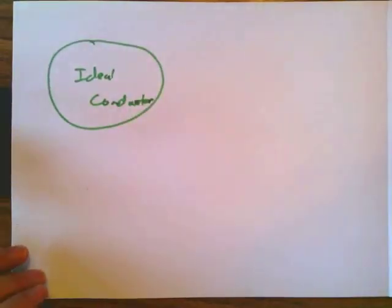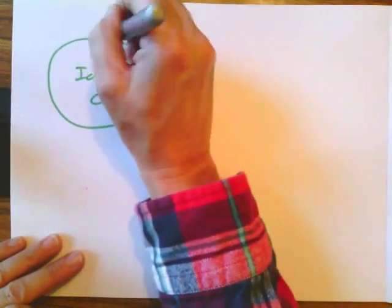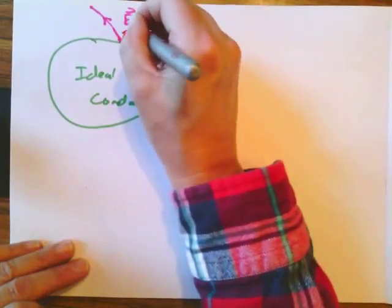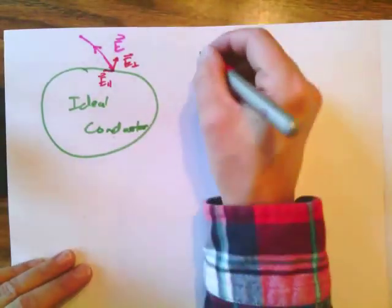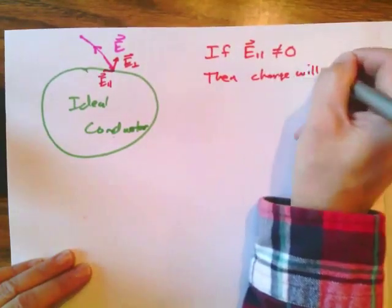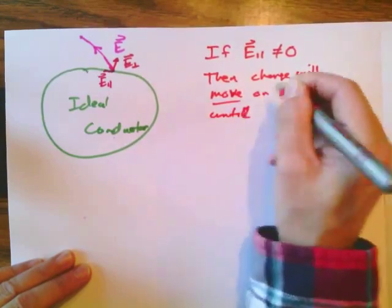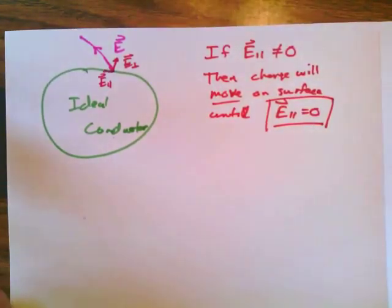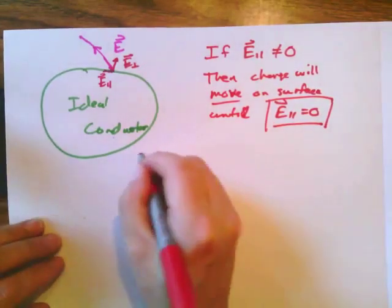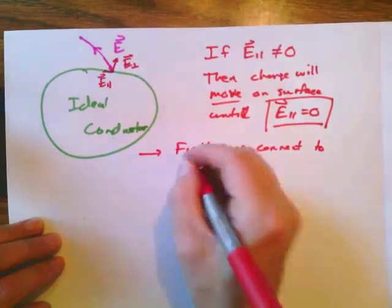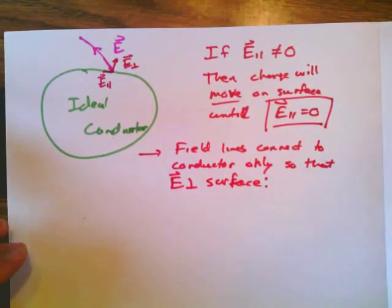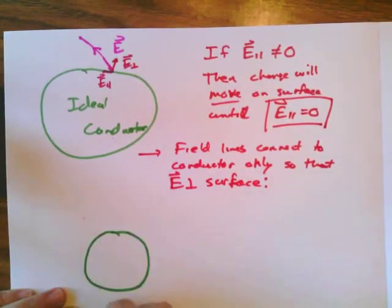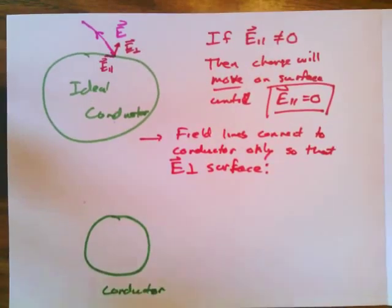Now let's think about what happens with an ideal conductor in the context of electric fields outside it. An electric field outside a conductor is allowed. If the field comes into the surface at some angle, it has two components: a perpendicular component and a parallel component. If the parallel component is not zero, charges will move on the surface until it becomes zero. Therefore, the electric field lines coming into a conducting surface must always be perpendicular to the surface — the parallel component is always zero.